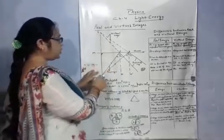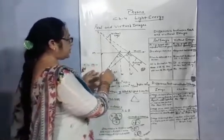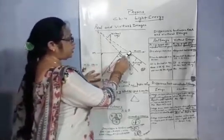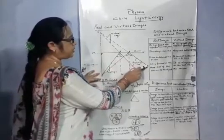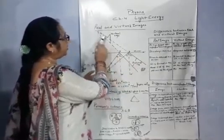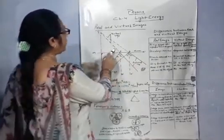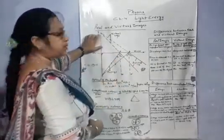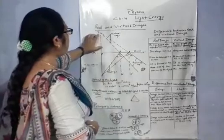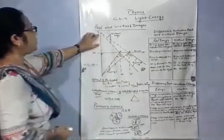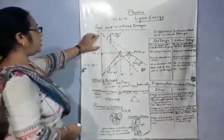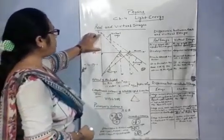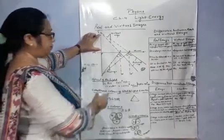These two rays are coming from this side and after reflection, behind the mirror, they intersect at the point that is the eye. So virtual image is formed behind the mirror.